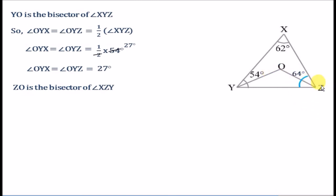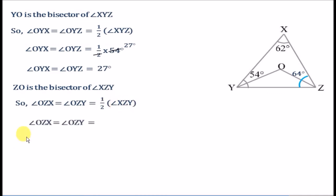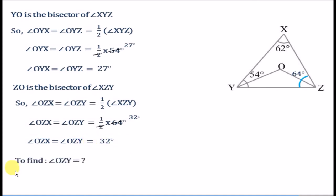ZO is the bisector of angle XZY, so ZO divides angle XZY into two equal parts: angle OZX and angle OZY. Both equal half of angle XZY, which is half of 64 degrees, so angle OZX equals angle OZY equals 32 degrees. We had to find angle OZY, and we have found it equals 32 degrees.